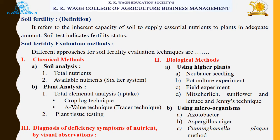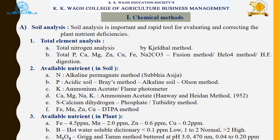The third method is diagnosis of deficiency symptoms of nutrients by visual observations. Now let's start with chemical methods, in which the first is soil analysis. Soil analysis is an important and rapid tool for evaluating and correcting plant nutrient deficiencies.